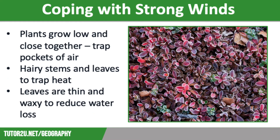Our final challenge is strong winds. Polar and tundra regions are blasted by strong icy winds from the North Pole, so plants need to adapt to keep warm and minimise water loss through transpiration. Plants grow low and close together to protect themselves from the wind by trapping pockets of air. They usually have hairy stems and tiny hairs on their leaves to trap heat, and their leaves are thin and waxy to reduce water loss through transpiration.